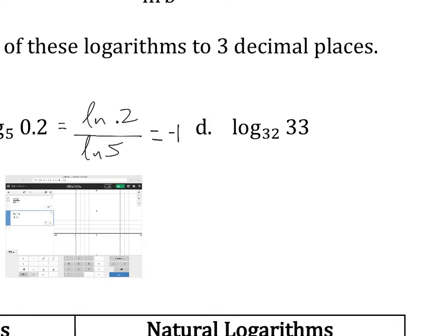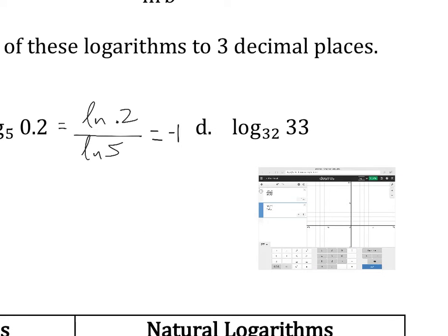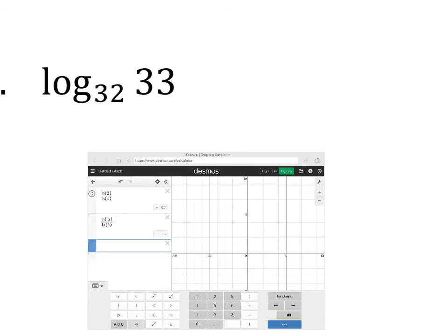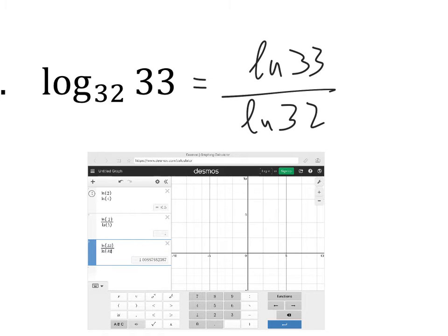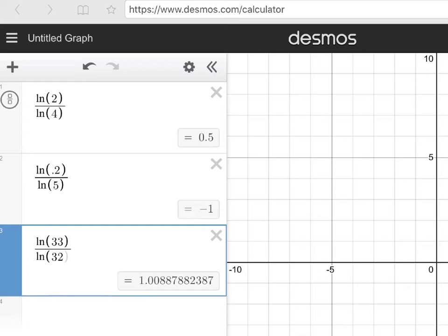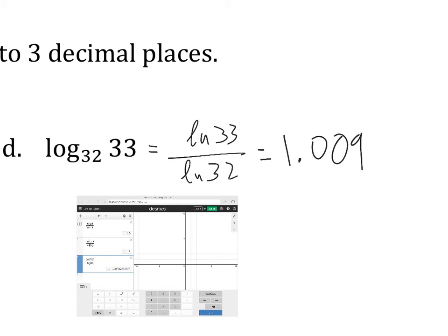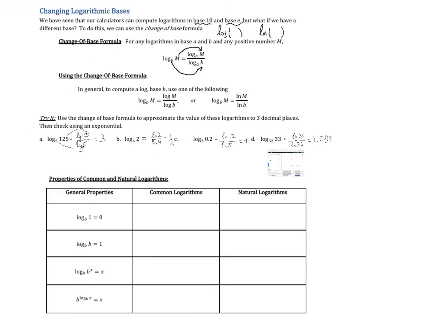And one more here. How about the log base 32 of 33? Those ones are all nice, neat numbers that we probably could have come up with just working it out with what we know about logarithms, but what if we have something a little stranger? The log base 32 of 33, we're going to change this into the natural log of 33 over the natural log of 32. We're going to go natural log of 33 divided by the natural log of 32. And we get 1.0088, or 1.009 would be good enough. Which makes sense, because the power on 32 to make it 33 needs to be a little bit bigger than 1, because 32 to the first power is 32. That's how the change of base works.